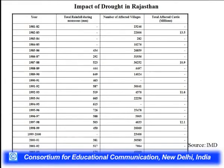Looking at data on rainfall and number of affected villages: large droughts occurred in 1990-92 and 1985-87, which was also considered one of the highest droughts in the century. Drought mitigation for cattle requires careful planning — sometimes there is arrangement for human beings but not for cattle. These aspects require a very careful drought mitigation system.